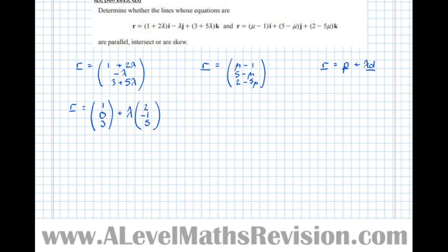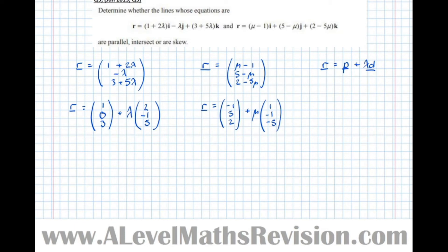For the second line: R equals (-1, 5, 2) plus μ(1, -1, -5). Checking: -1 + 1μ gives μ - 1; 5 - 1μ gives 5 - μ; and 2 - 5μ matches. So both lines are now in the standard form of a point plus a parameter times a direction vector, which is what we want to work with.